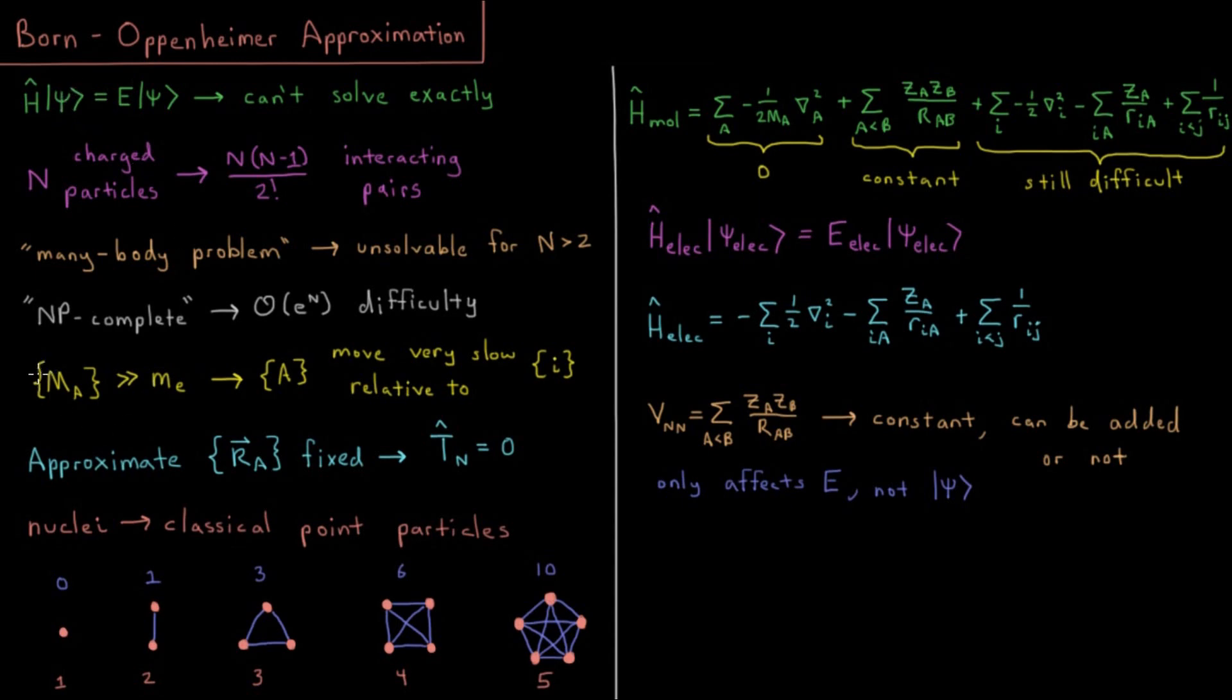So the first thing we notice is that the mass of the nuclei is much, much greater than the mass of an electron. As I noted in the previous video, a hydrogen nucleus weighs about 2,000 times more than an electron. And most nuclei contain more than just one particle. For example, a carbon atom would have 12, a carbon-12 would be 12.